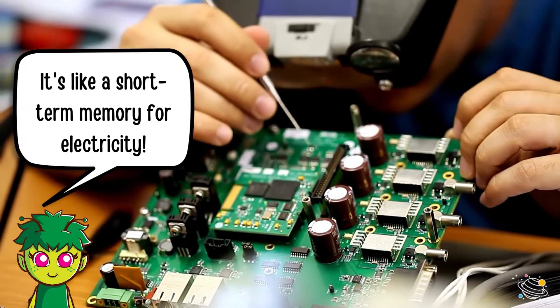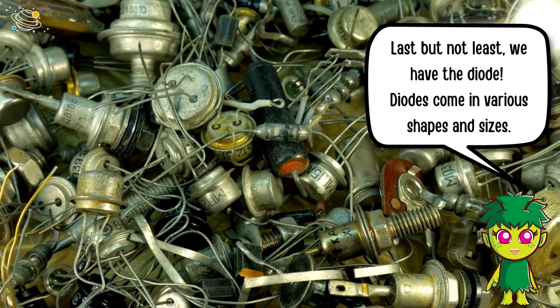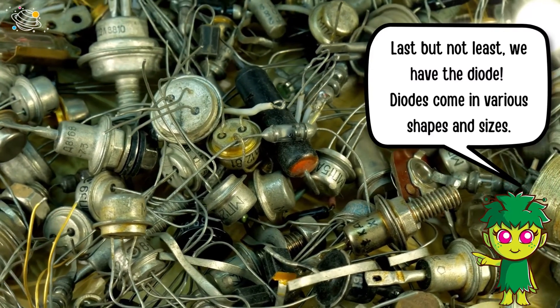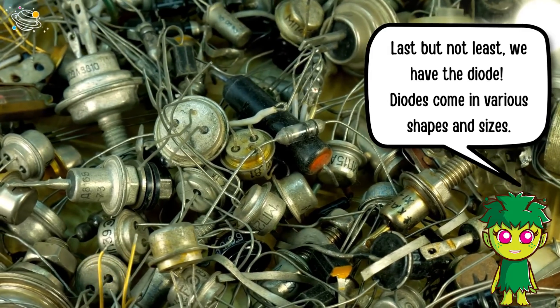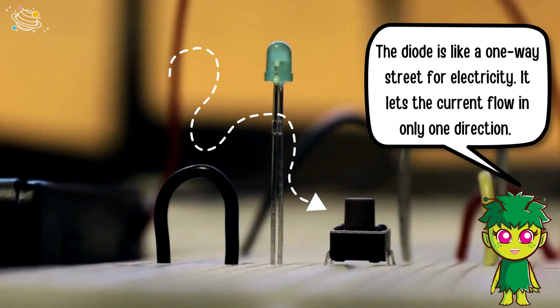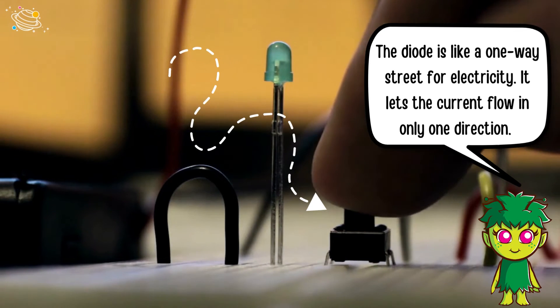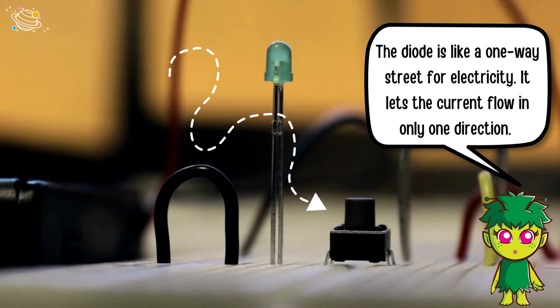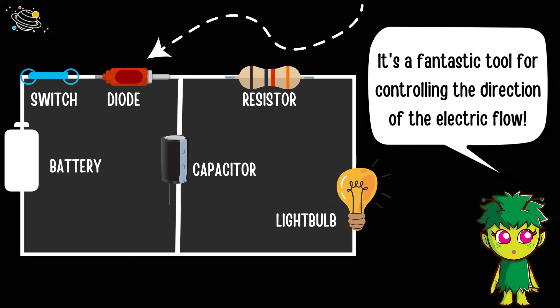Last but not least, we have the diode. Diodes come in various shapes and sizes. The diode is like a one-way street for electricity. It lets the current flow in only one direction. It's a fantastic tool for controlling the direction of the electric flow.